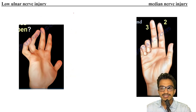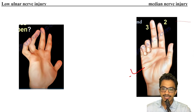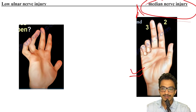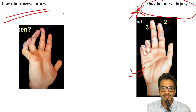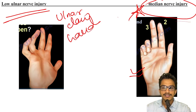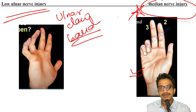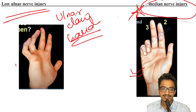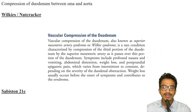If a figure like the benediction sign is given, it is seen in median nerve injury and that should be the answer. If the image shows an ulnar claw hand pattern instead, it should be ulnar nerve injury. Both signs are different — benediction sign = median nerve injury, claw hand = ulnar nerve injury.